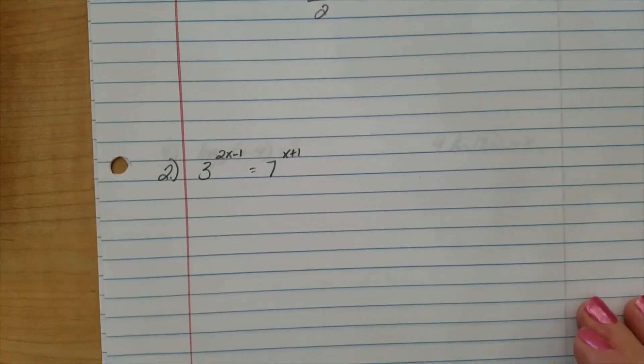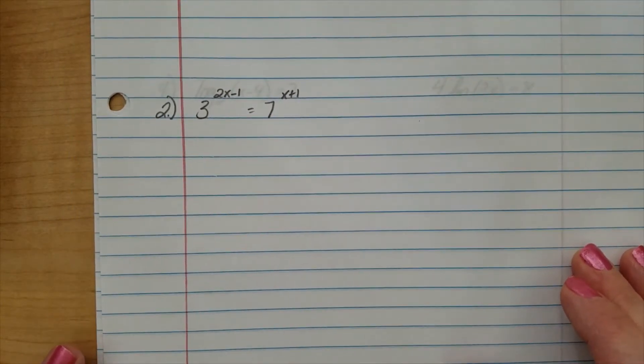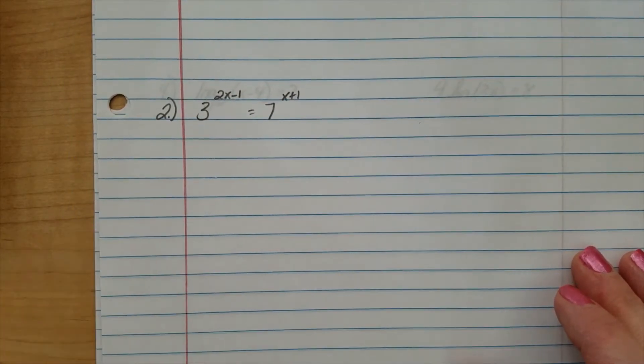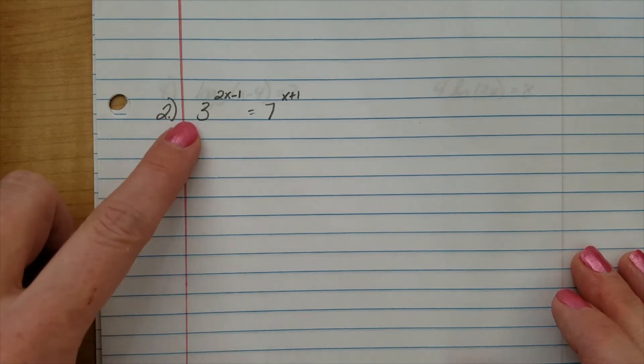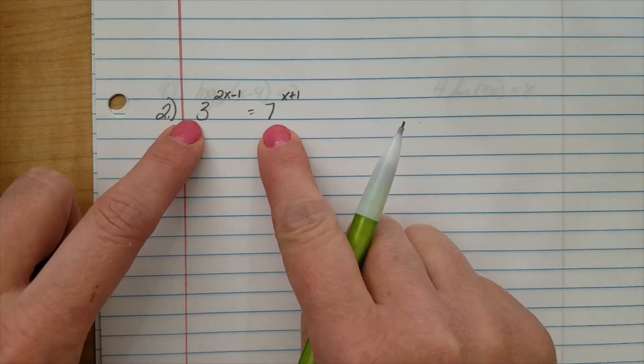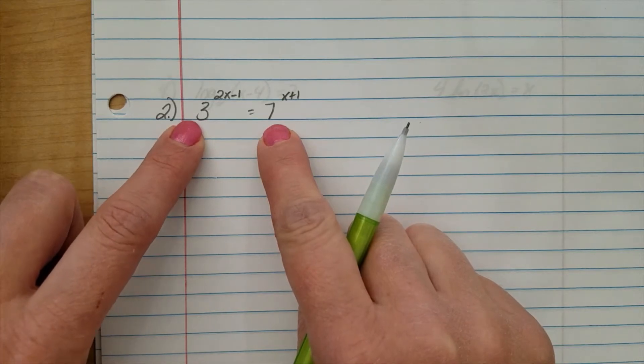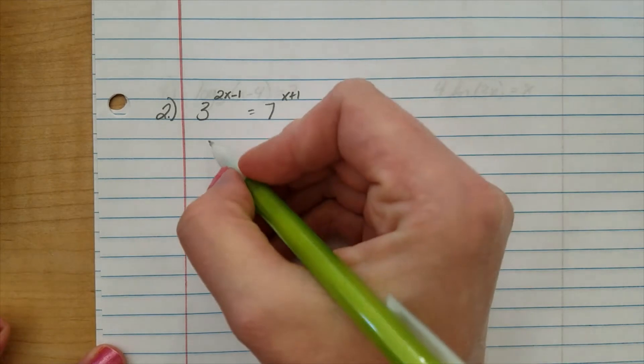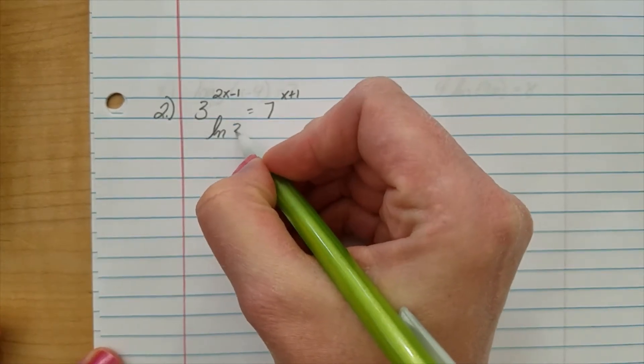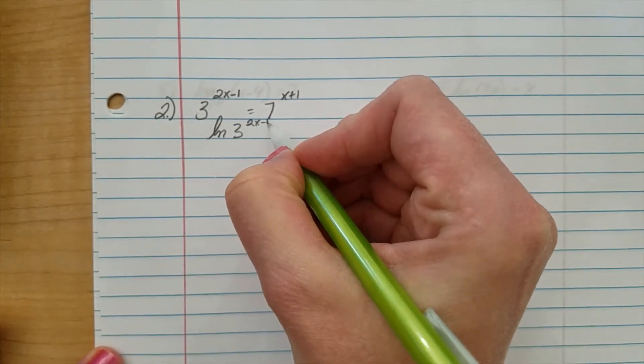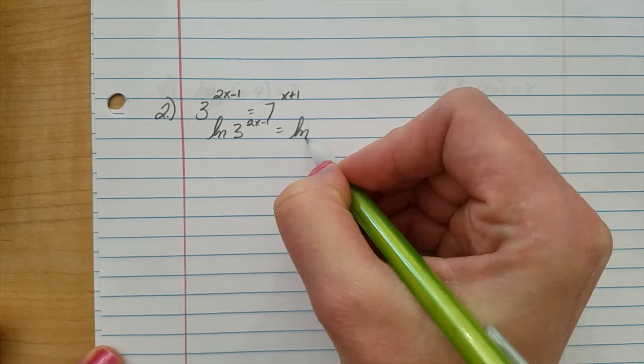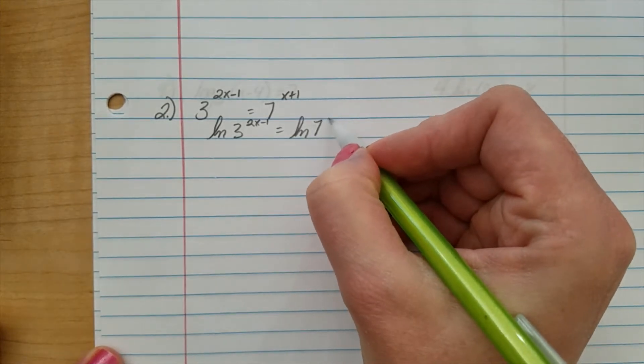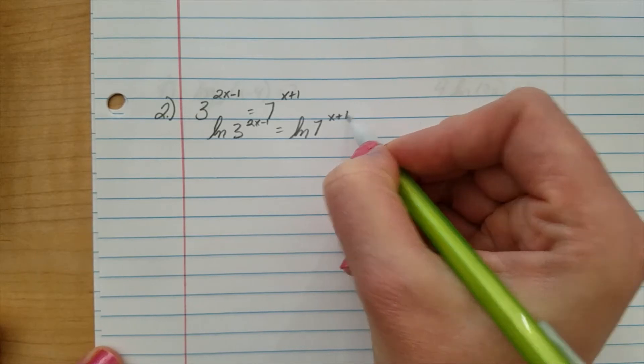Number 2. Now, it would be lovely if we could get these to have the same base, but we cannot. There's nothing we could do here to get 3 and 7 to have the same base. So, I will just take the natural log of both sides. So, natural log of 3 raised to the 2x minus 1 equals the natural log of 7 raised to the x plus 1.